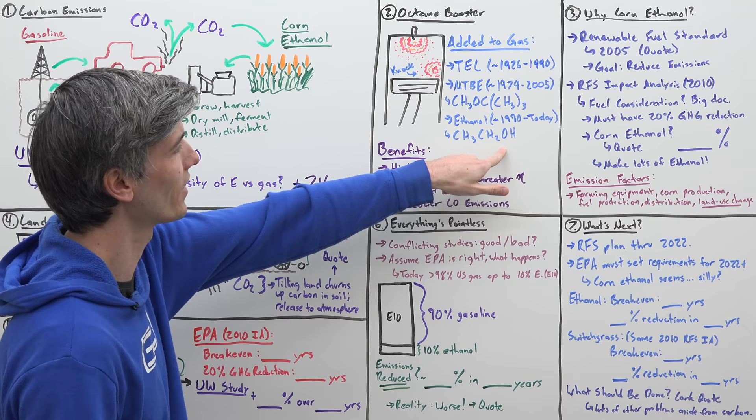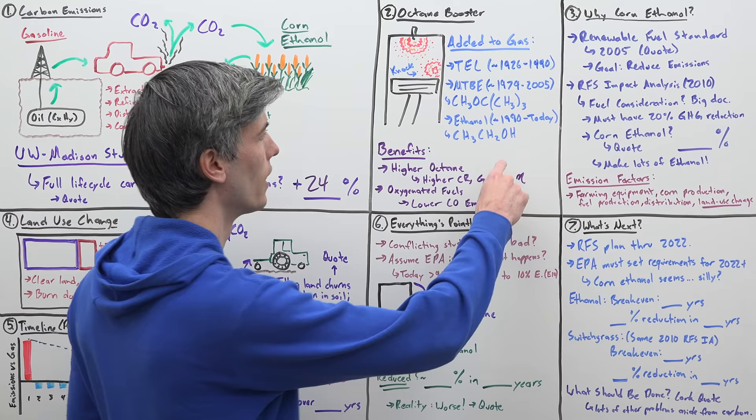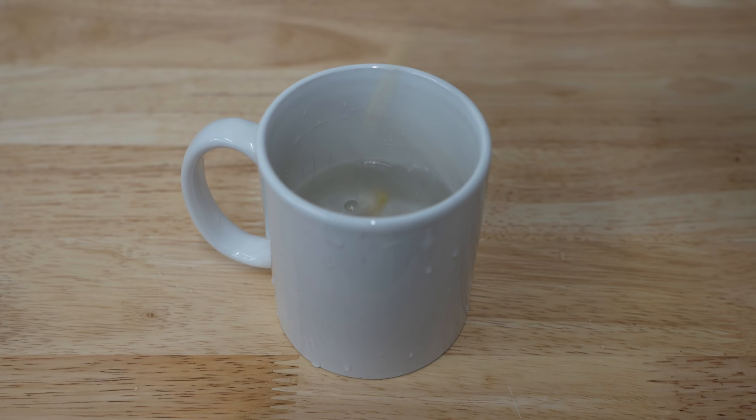It also oxygenates the fuel, which means that it has oxygen within the additive itself. So MTBE was also an oxygenated fuel, had oxygen in it, as is ethanol, looking at the chemical formula. And the reason for doing that, for using something like that as an additive, is it lowers the carbon monoxide emissions of a fuel, which again is a good thing to do. So these are good reasons to use ethanol within fuel.